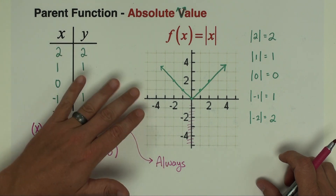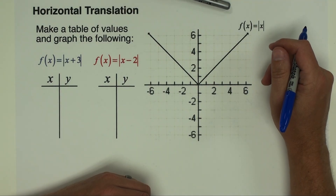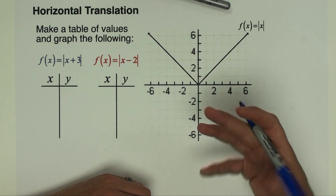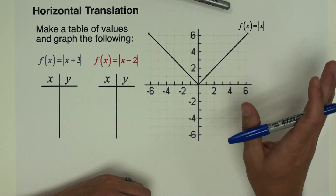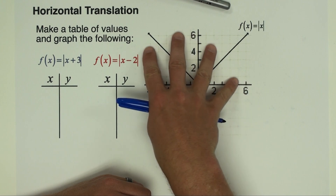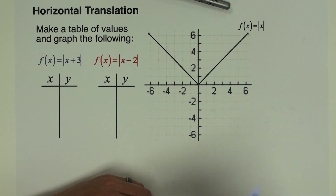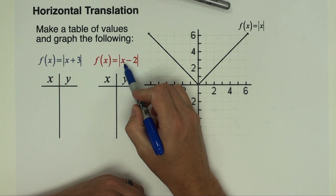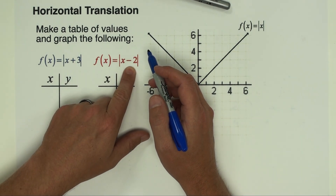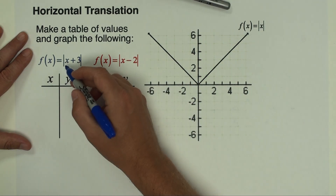Let's learn some shortcuts for graphing all absolute value graphs. The first thing to talk about is horizontal translation — left and right movement. How do you take this V-shaped graph and move it left or right? I've got two functions to explore: the absolute value of (x + 3) and the absolute value of (x − 2). We're adding or subtracting a number from inside the absolute value bars.